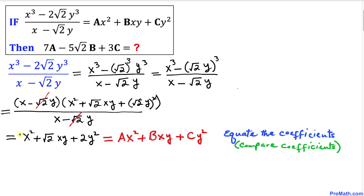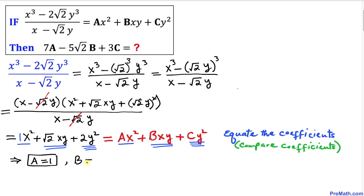Now let's compare the coefficients on both sides. On the left-hand side, x² has coefficient 1, so a equals 1. The xy term has coefficient √2, so b equals √2. And the y² term has coefficient 2, so c equals 2.